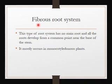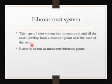The fibrous root system has no main root, and all the roots develop from a common point near the base of the stem. It mostly occurs in monocotyledonous plants.